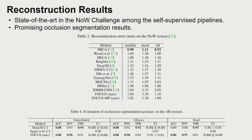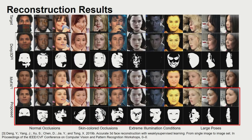Quantitative results on the NoW challenge show that our proposed method achieves state-of-the-art among self-supervised pipelines. The segmentation results also show that our method is promising in occlusion segmentation. The visual comparison shows that our method is robust under normal occlusions, skin-colored occlusions, extreme illumination conditions, and large poses.